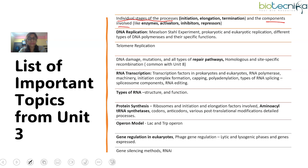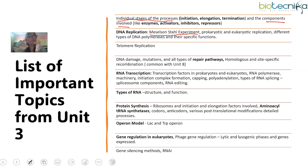Coming to DNA replication: questions definitely come from the Meselson-Stahl experiment, prokaryotic and eukaryotic replication, and different types of DNA polymerases and their specific functions — what DNA Polymerase I does, where it is required, what DNA Polymerase II does. You should have a very good idea about the properties of these DNA polymerases. This understanding will help you not only in Unit 3 but also in other units, because when you know how genes work and how the processes are done, you'll understand how to modify them in recombinant DNA technology.